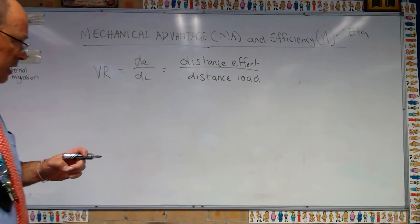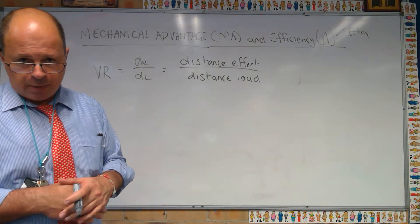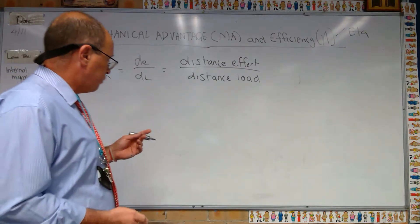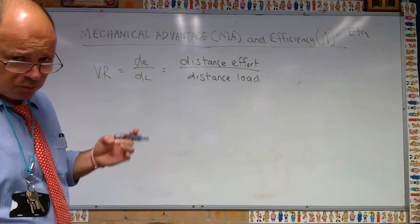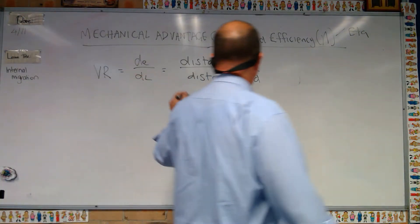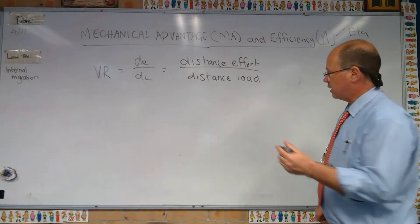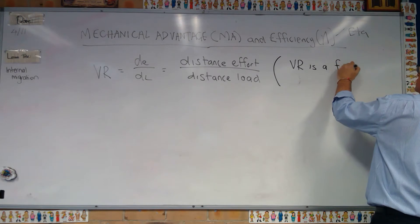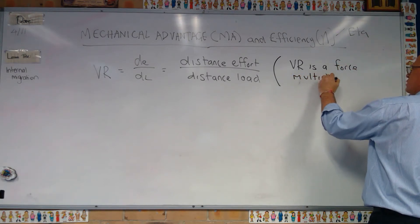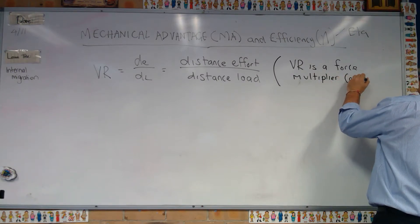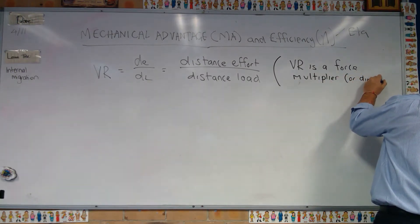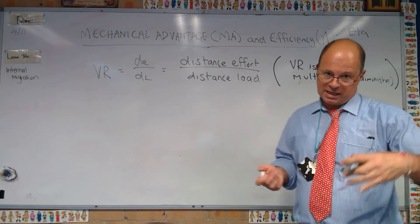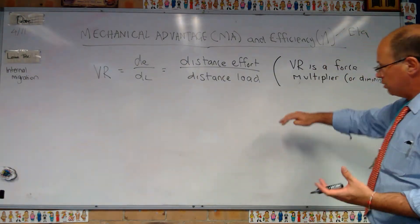In an ideal world, a machine would have no losses and would be 100% efficient. VR can be thought of as a force multiplier or a force diminisher. If VR is greater than one, it's going to be a force multiplier; if it's less than one, it's going to be a force diminisher.